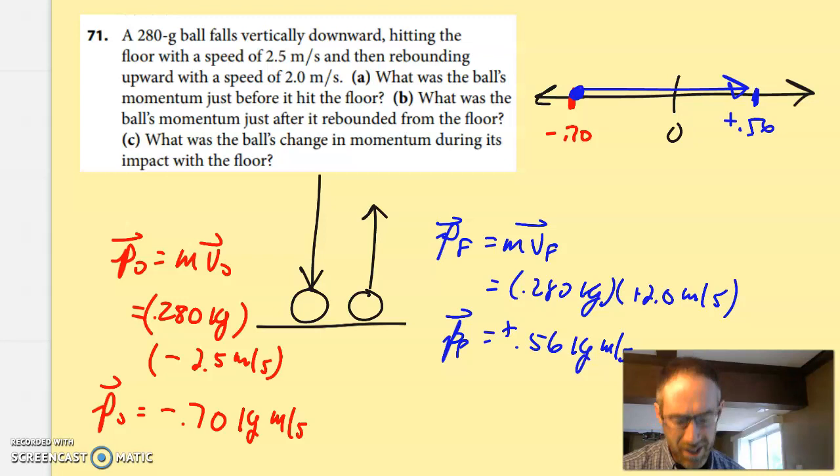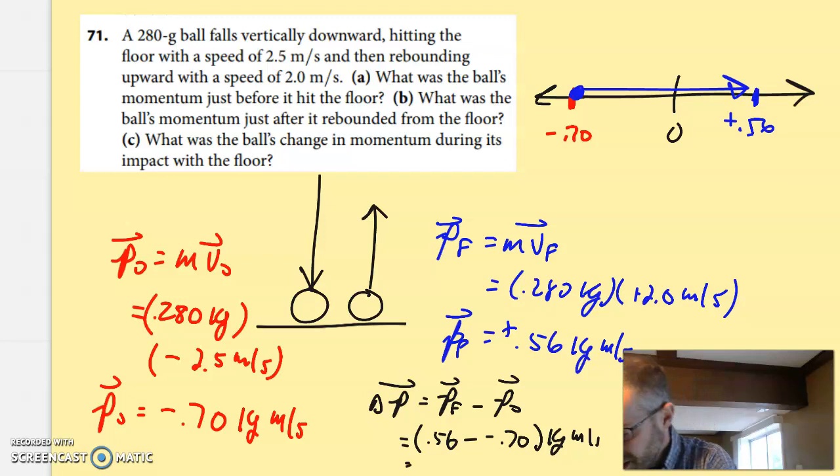I can show you that mathematically. I can say the change is the final minus the initial. All of those are vectors, and so it's going to be the 0.56 minus a negative 0.70 kilogram meters per second, and when you go ahead and do that, you end up getting a value of a positive 1.12 kilogram meters per second.